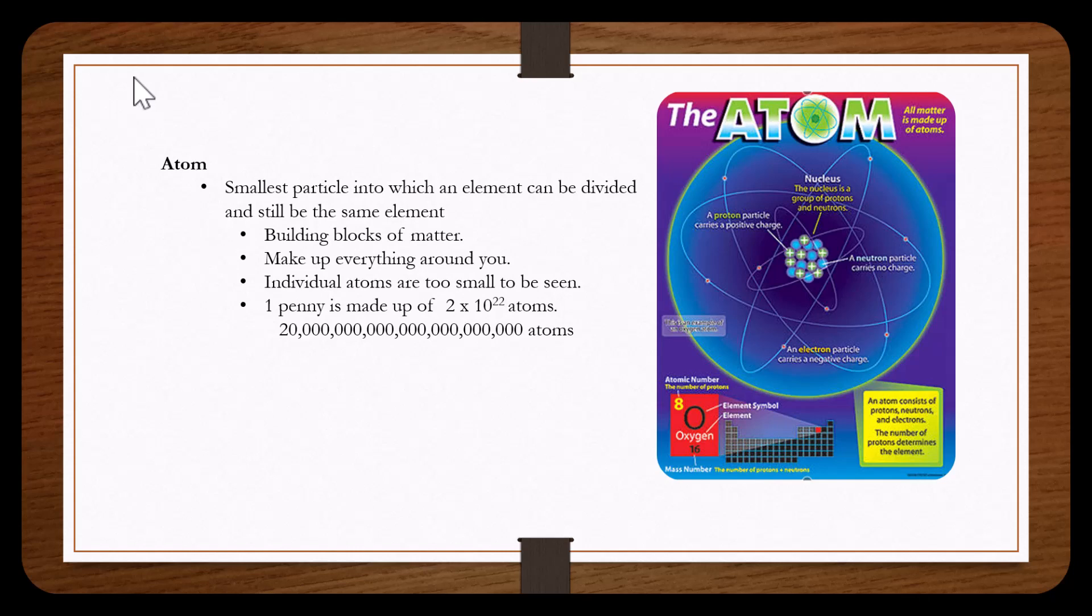To give an idea how small an atom is, one penny is made up of about 2 times 10 to the 22nd atoms.